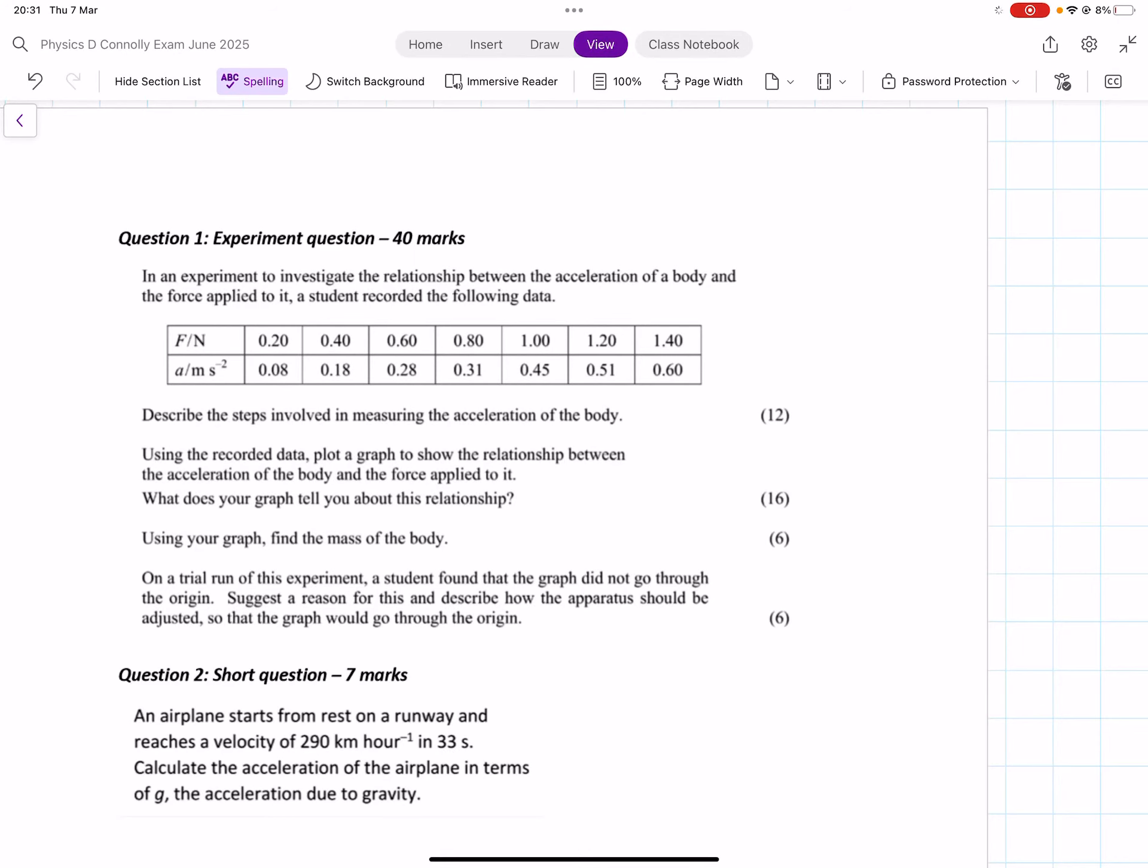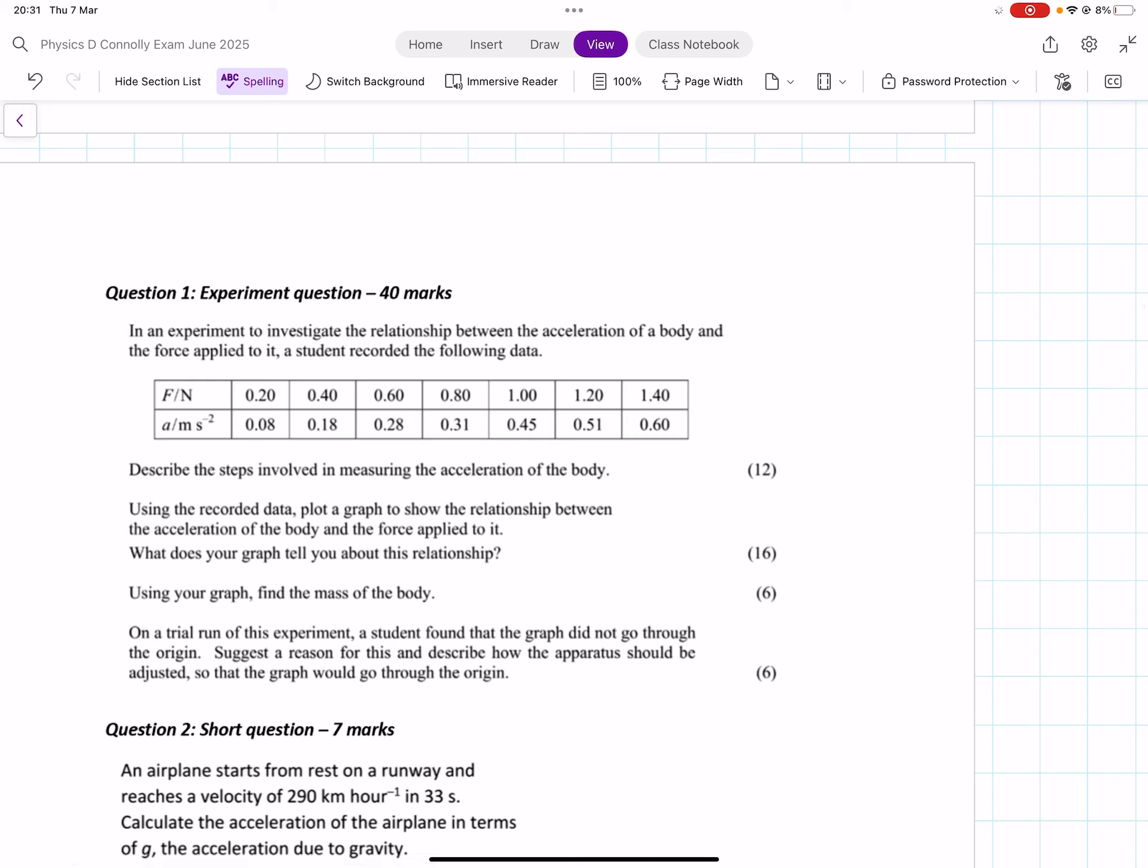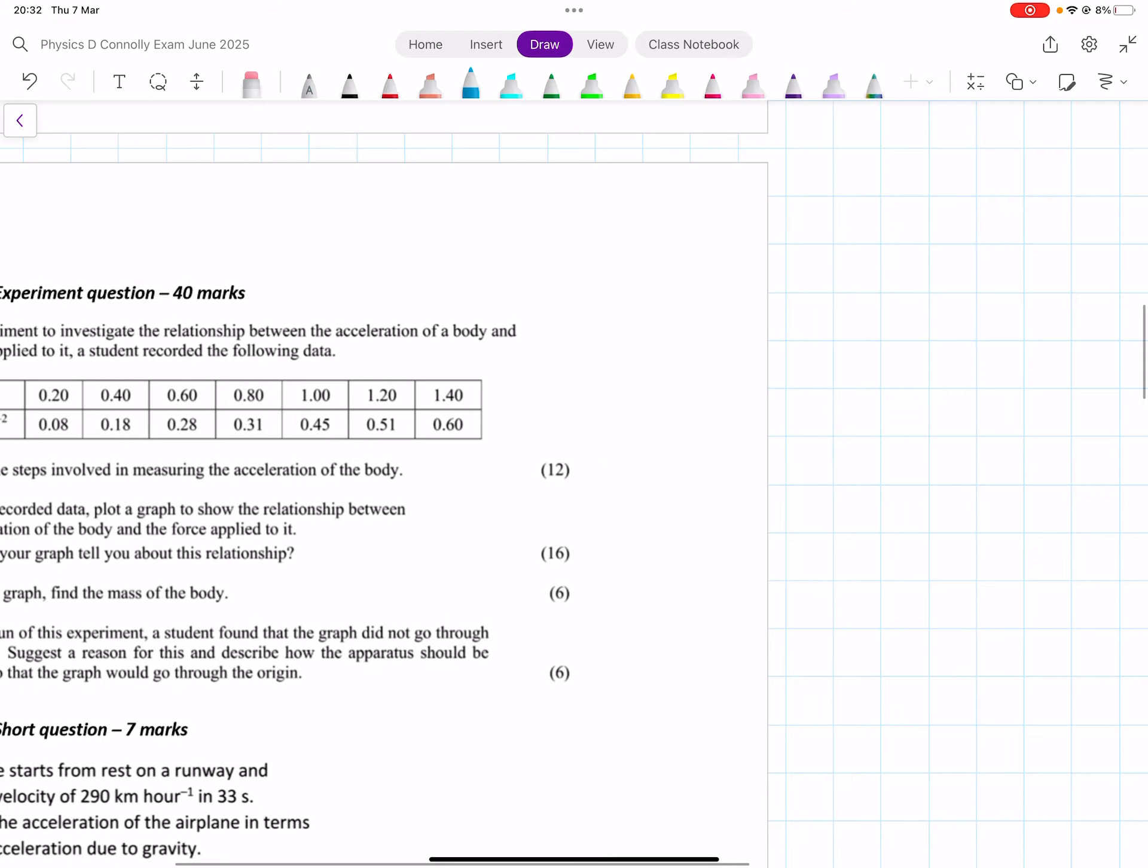So I'm going to do question one. I should have got question two done here as well, and then I might need to stop because my laptop's going to die. Right, so this is the relationship between the acceleration of a body and the force applied to it. The student recorded the following data. Describe the steps involved in measuring the acceleration of the body.